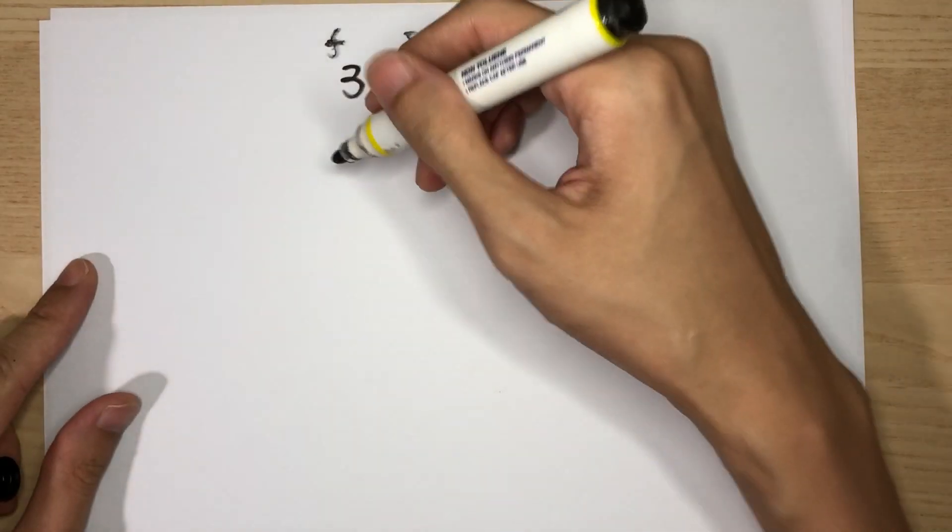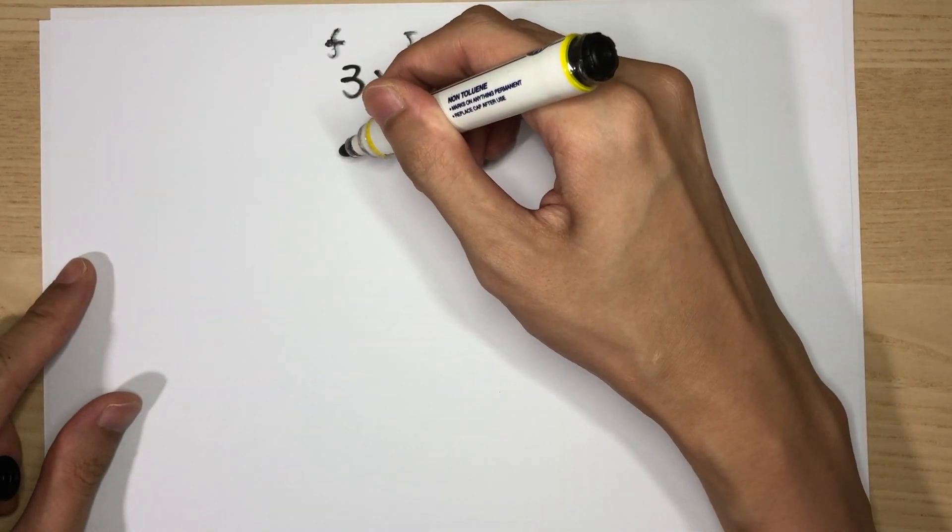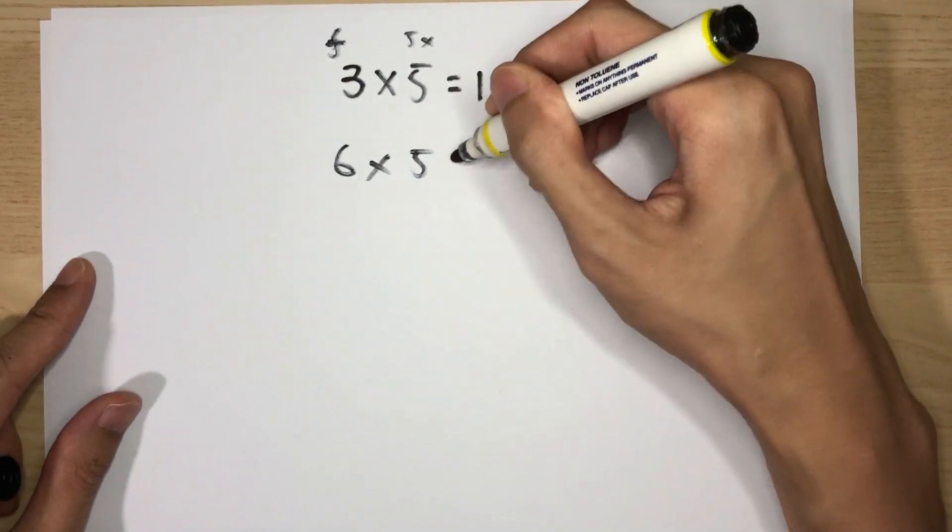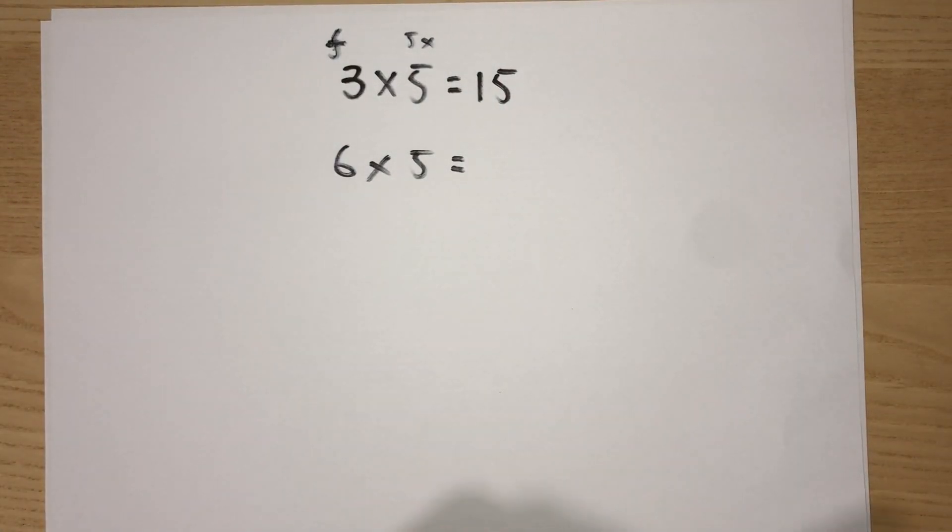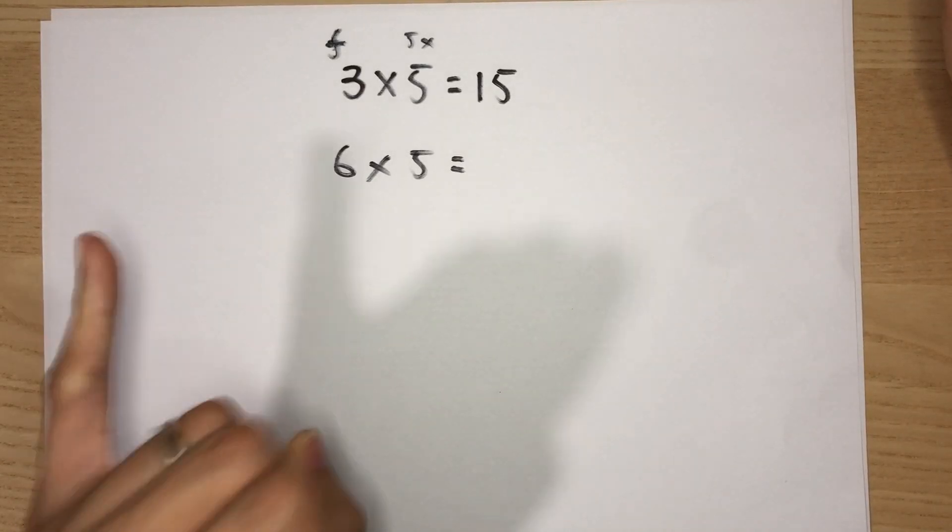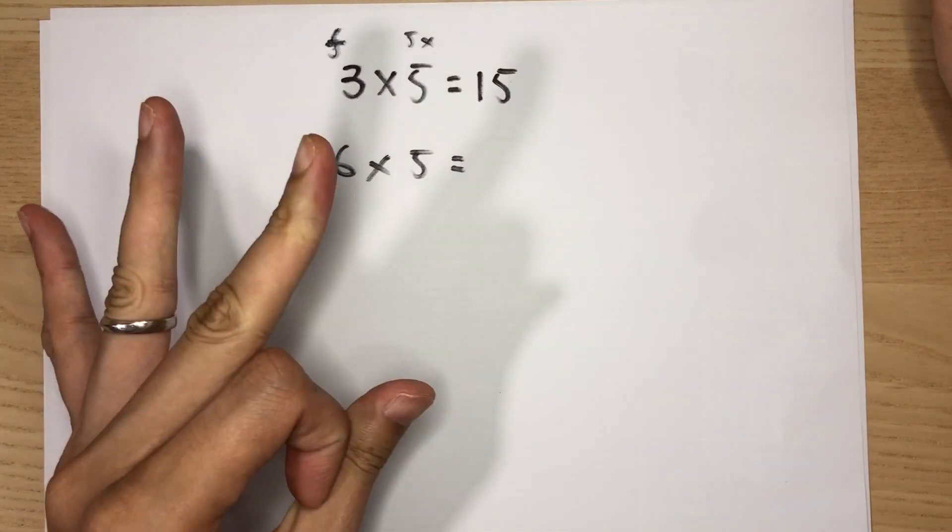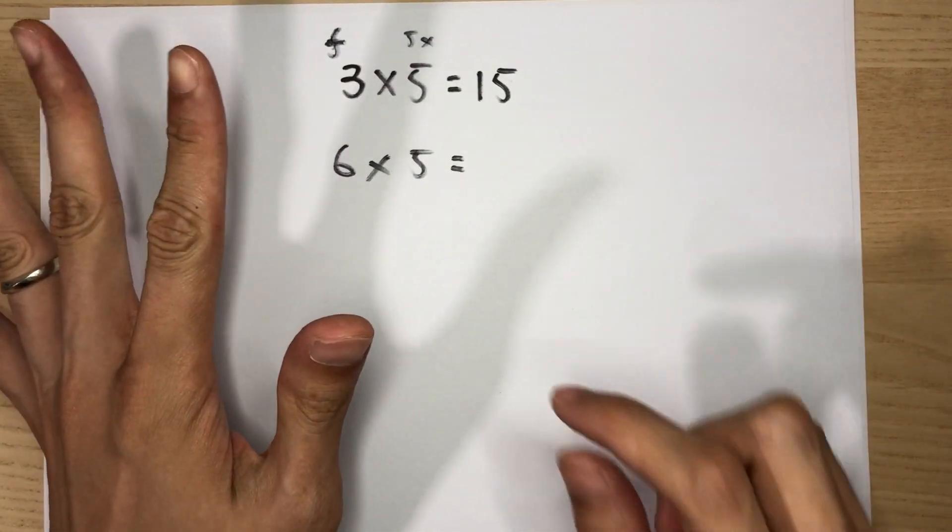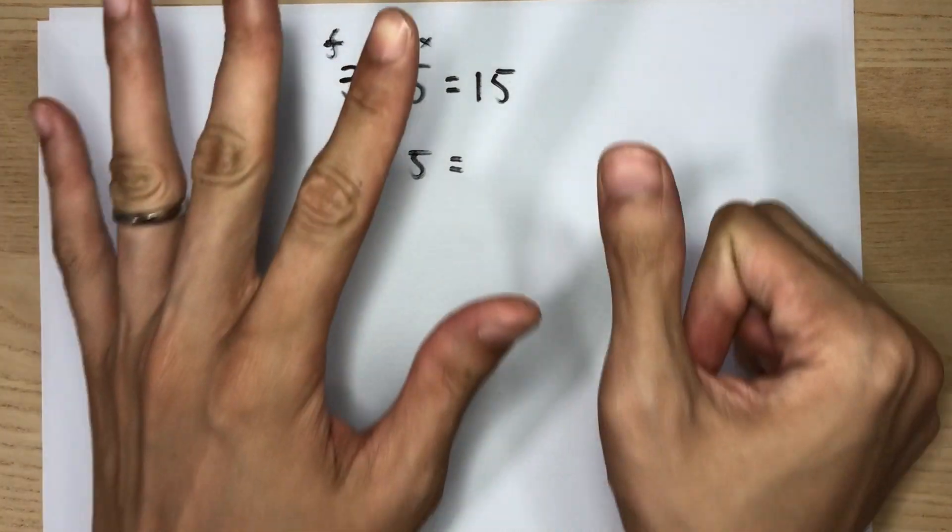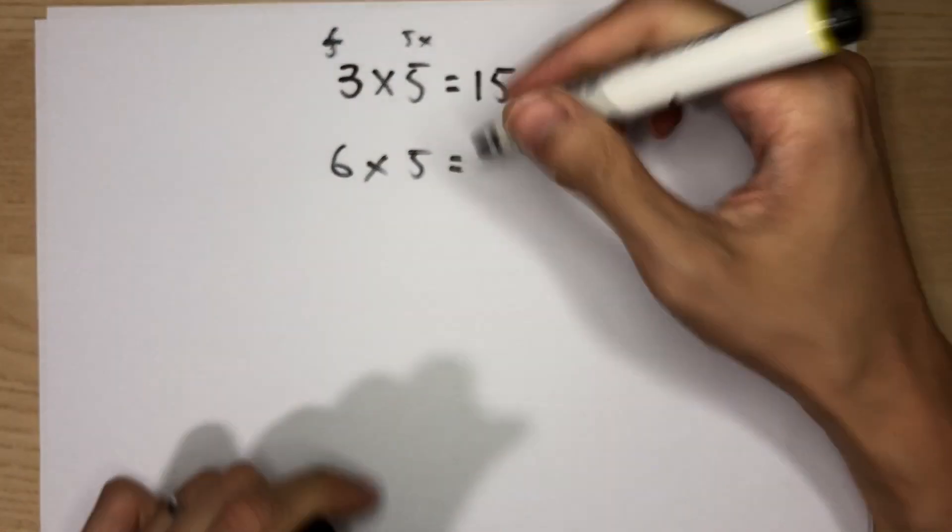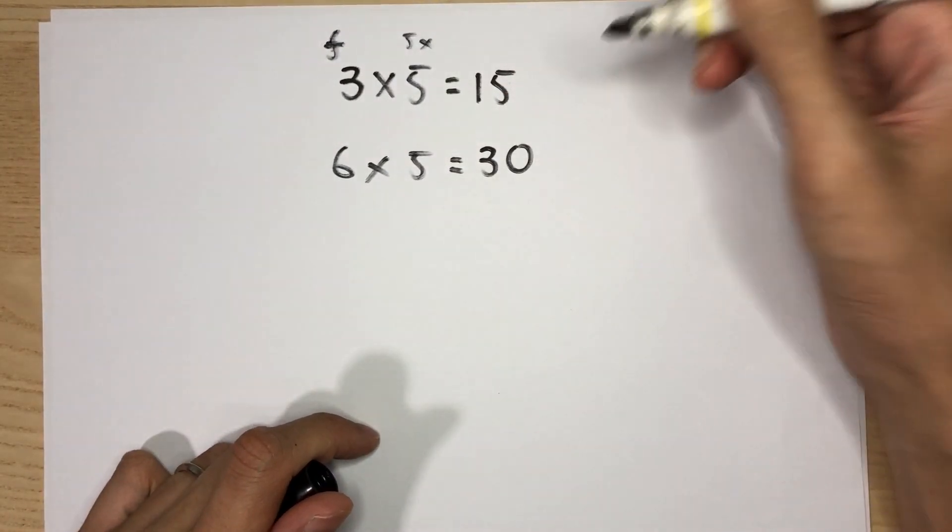Now, try the next one yourself. Let's have 6 times 5. Give you a while. Try the answer yourself, and then we'll go through. Ready? 3, 2, 1, go. 5, 10, 15, 20, 25, 30. So 6 fingers, what's the answer? 30, right? So the answer is 30.